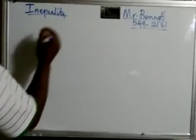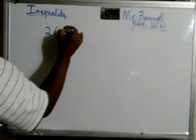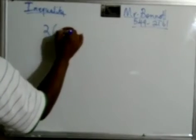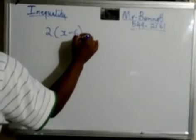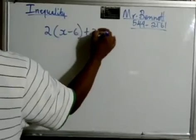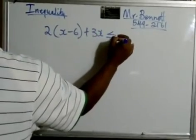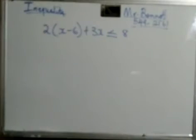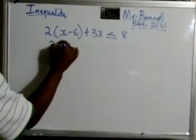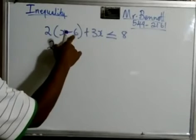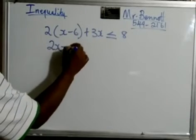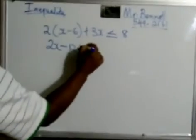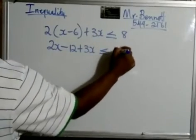All right. So we have 2 bracket x minus 6 plus 3x is less than or equal to 8. Now, just like with equations, we need to get rid of the bracket. And the bracket means to multiply. So we expand the bracket. Everyone should be able to do that. 2 times x is 2x. 2 times negative 6 is negative 12. Put the plus 3x. Less than or equal to 8.